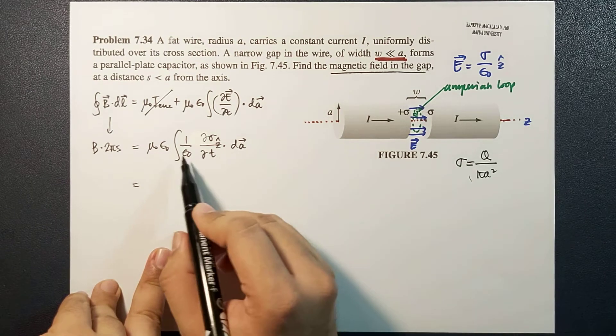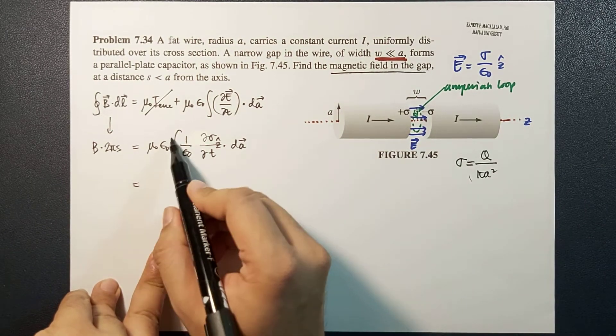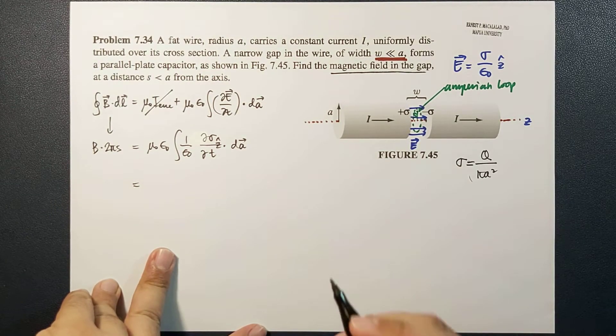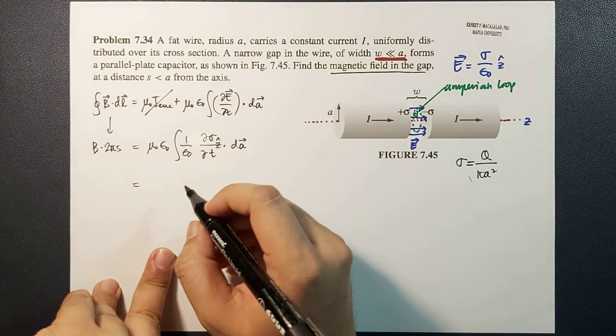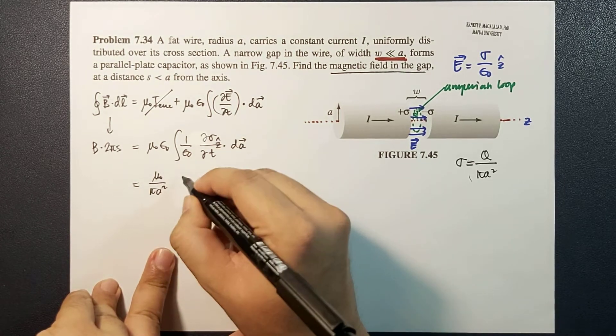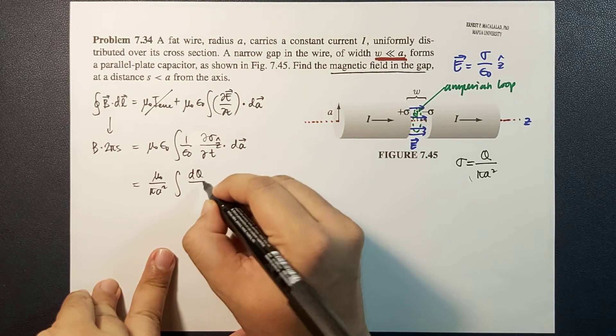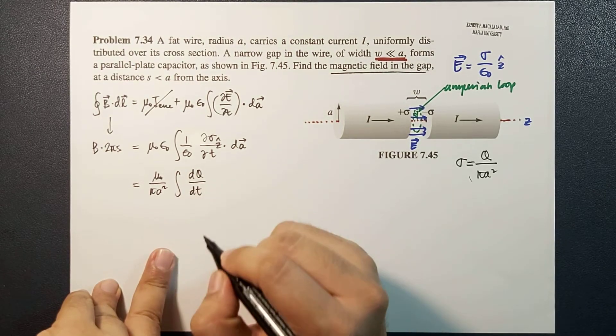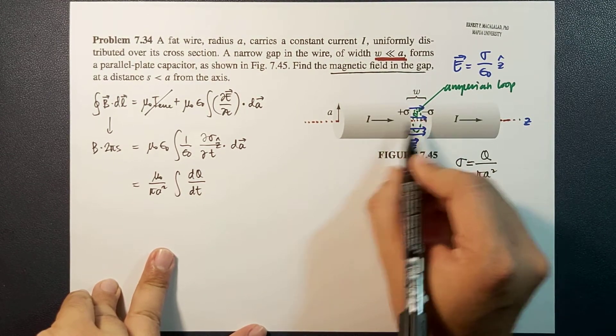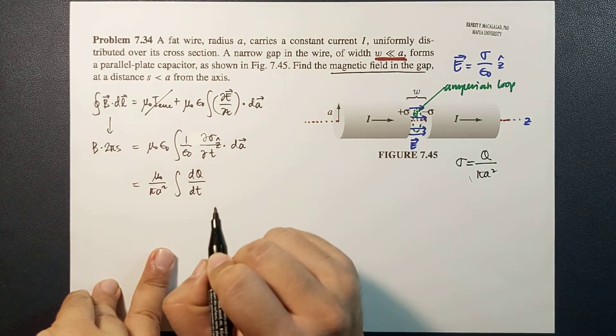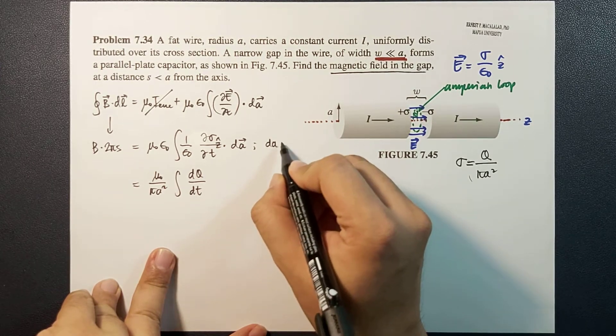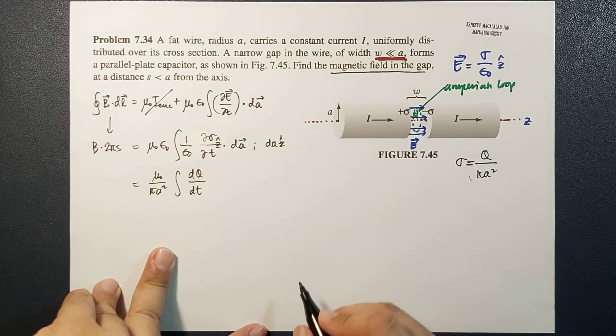So the constant in this term will now be equal to mu naught over pi A squared, and this will become the integral of dq/dt with respect to time. Because the area vector here will be along the Z direction as well, this dot product becomes a simple multiplication where dA will now be just a simple differential.